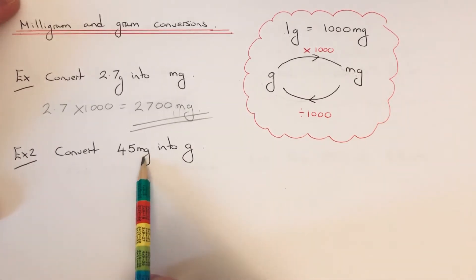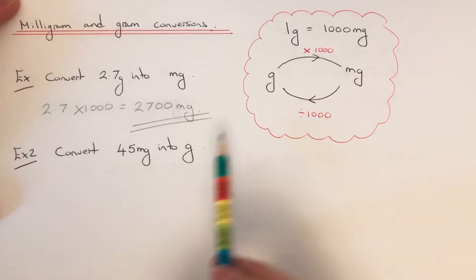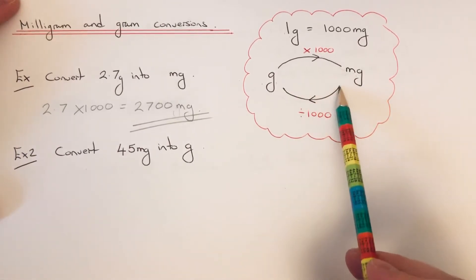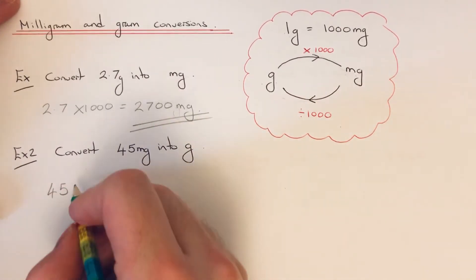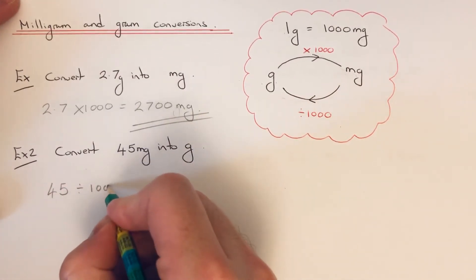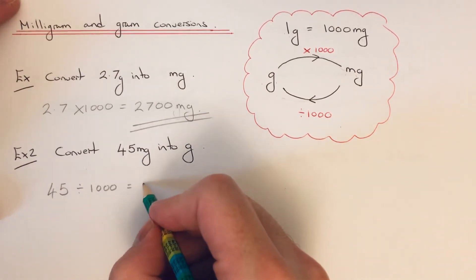This time we've got to convert 45 milligrams into grams. So milligrams to grams, you need to divide by a thousand. Again, if we put the 45 down first and we divide that by a thousand.